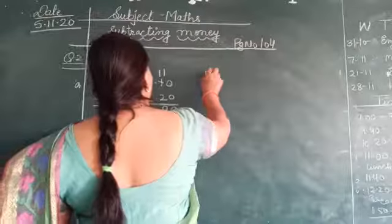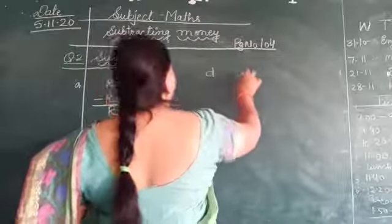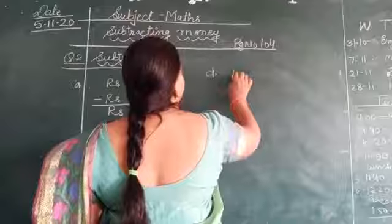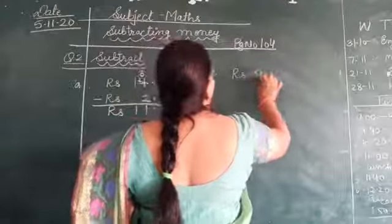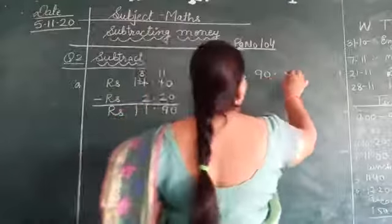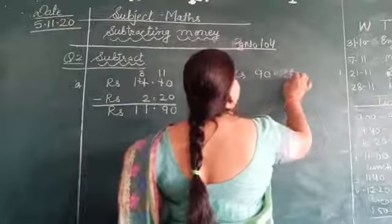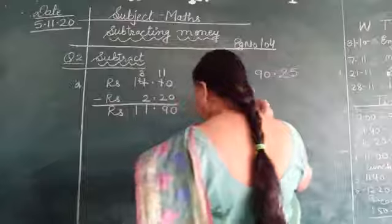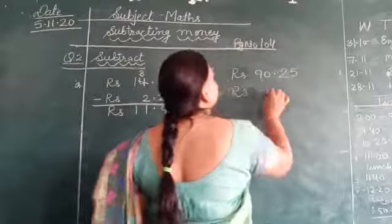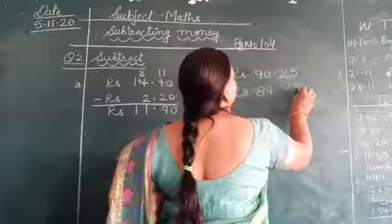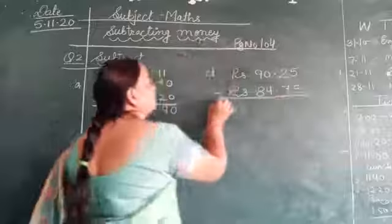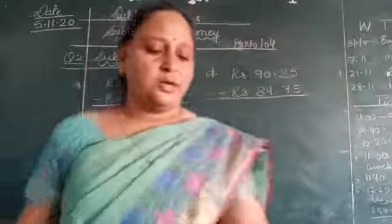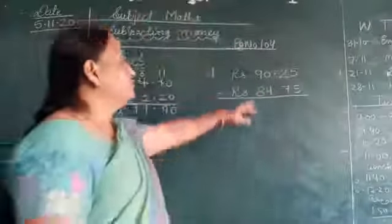Now we will do D. Rupees 90 minus rupees 25. Rupees 84.15 minus.